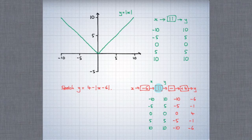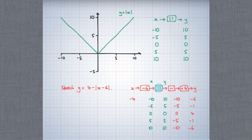The x-coordinates also change. This time they need to be 6 more than they used to be, so that when we subtract 6 we get the right inputs to the modulus function. So where before we had minus 10, now we have minus 4. Where we had minus 5, now we've got 1. Instead of 0, we need 6. Instead of 5, we need 11. And instead of 10, we need 16.